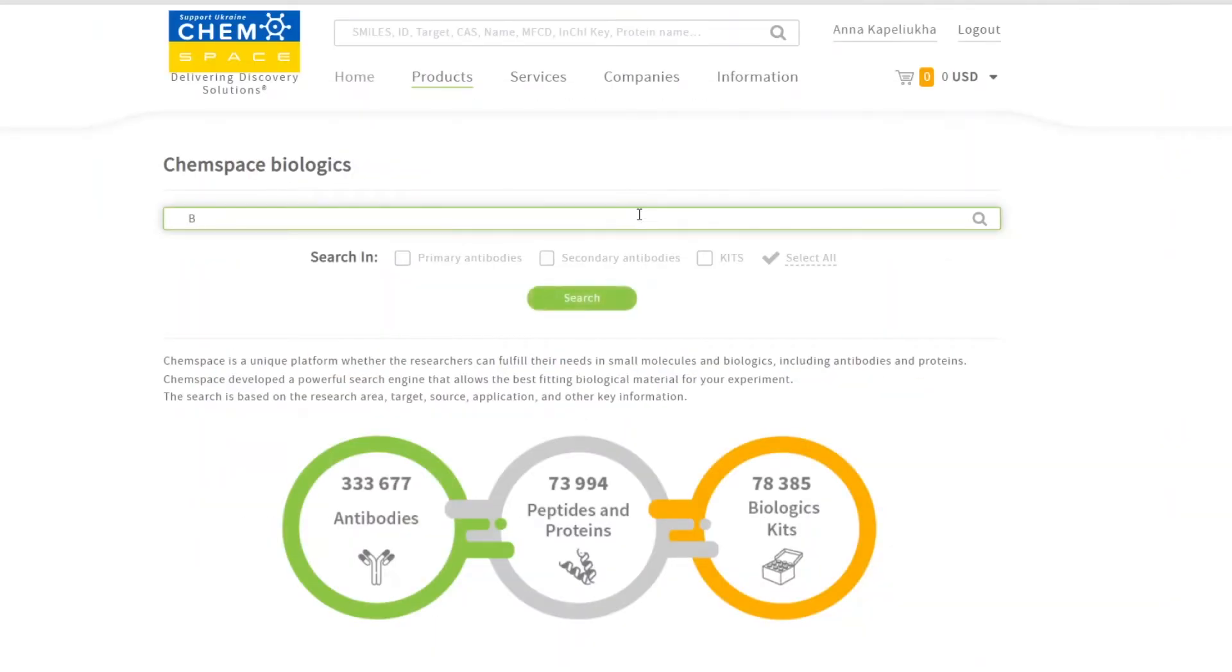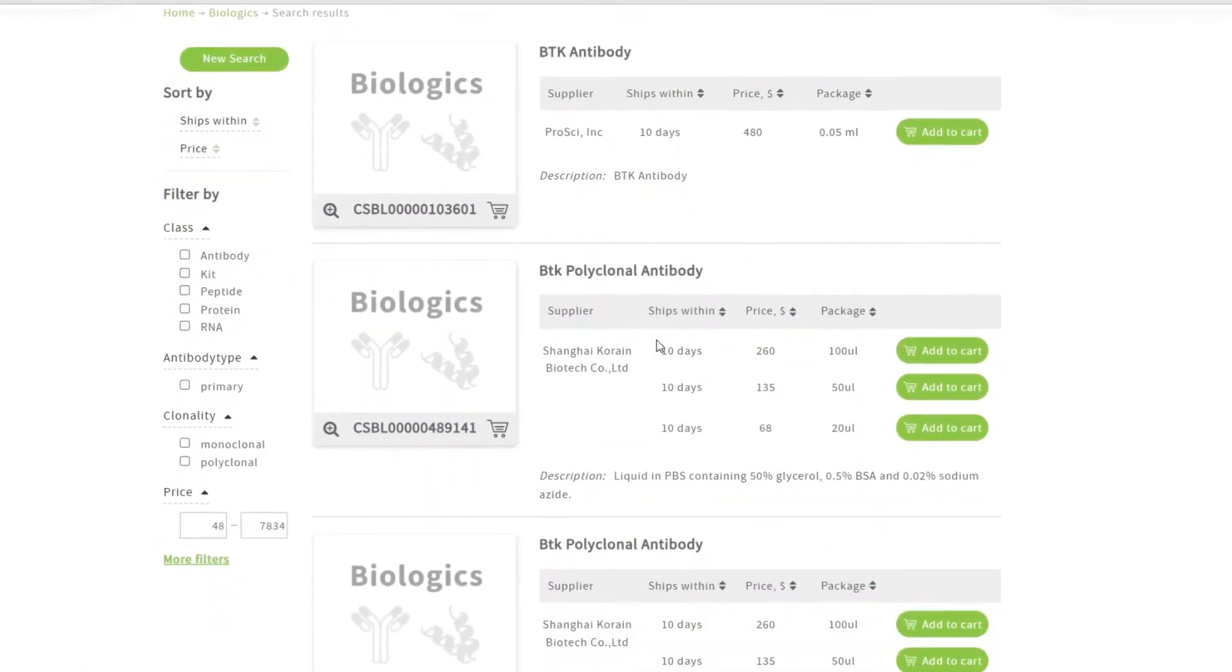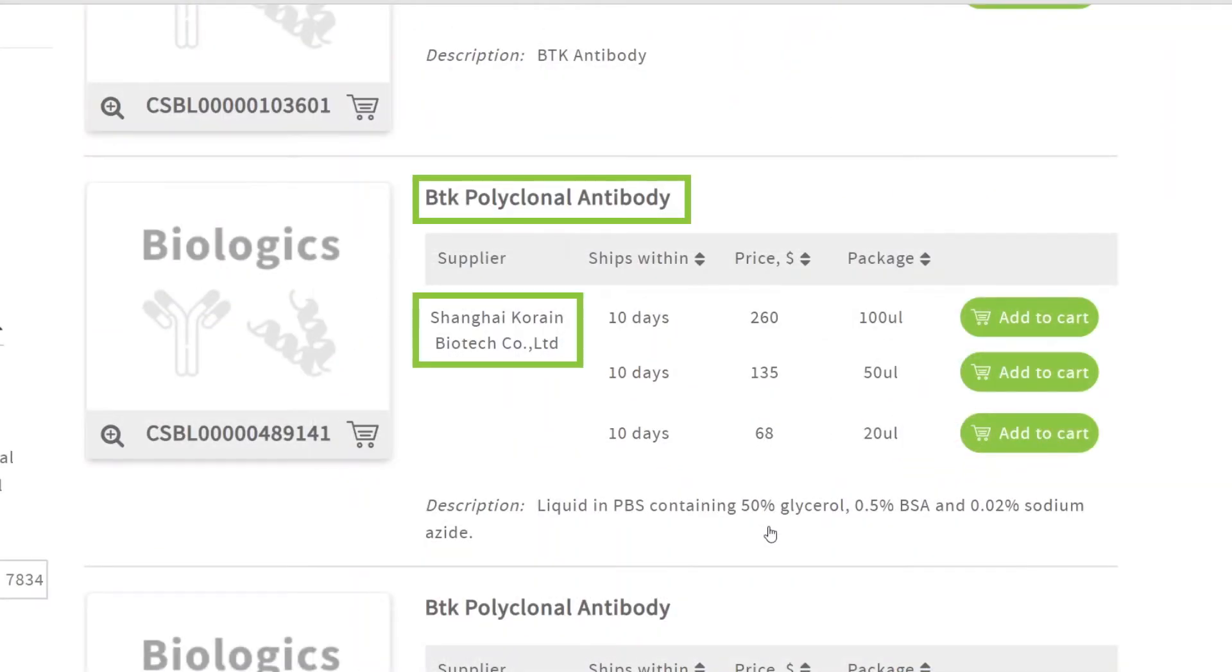Let's search something. We're getting the results which we can work with. You see the name, supplier information and a brief description.